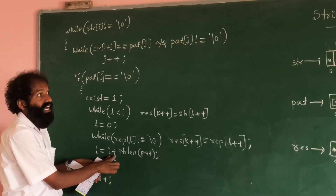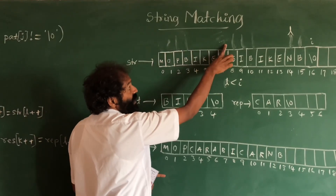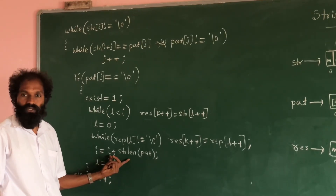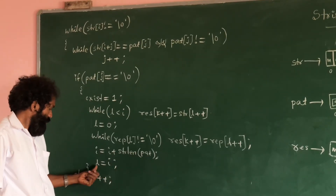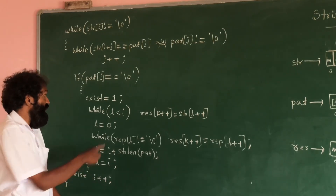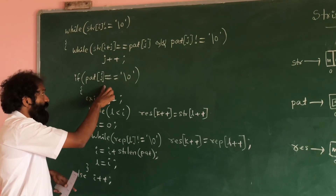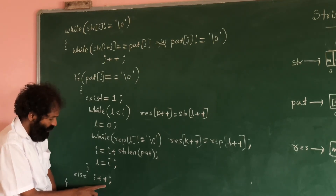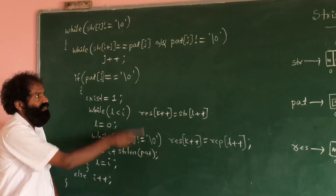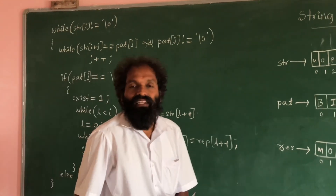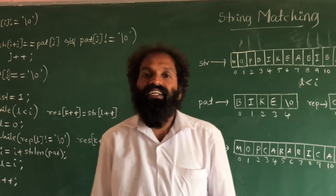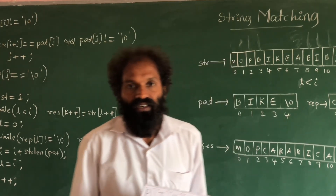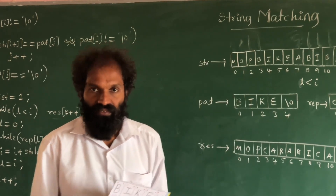Then i jumps: i is equal to i plus the string length of the pattern, and l is set equal to i. If the string doesn't exist — meaning characters are different — we increment i. This is how it works, very simple. This is your second lab program. Please do the work and you will understand.